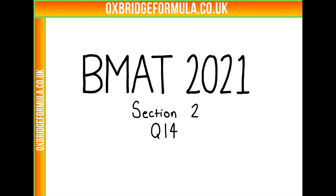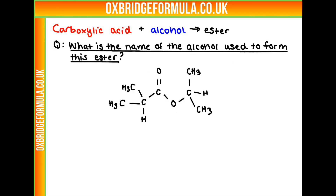This is BMAT 2021, Section 2, Question 14. We're told that when we combine a carboxylic acid and an alcohol, we get an ester. We're given an ester here, and we're asked to work out what is the name of the alcohol which was used to form this particular ester.